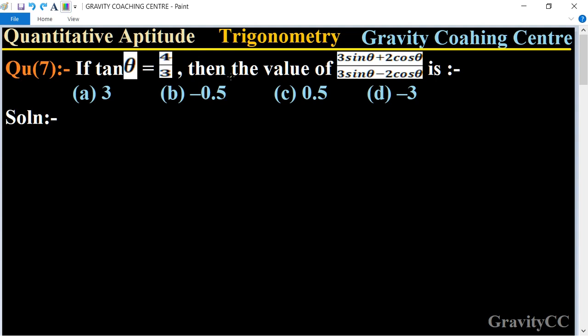If tan theta equals 4 upon 3, then the value of 3 sin theta plus 2 cos theta upon 3 sin theta minus 2 cos theta is equal to...